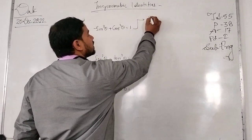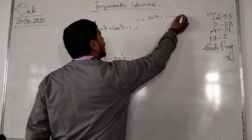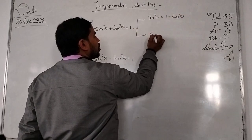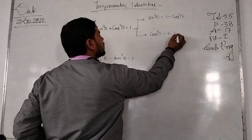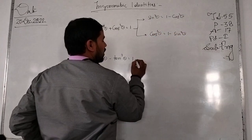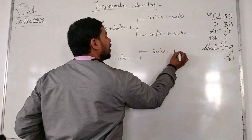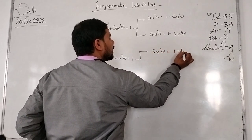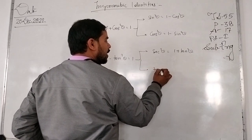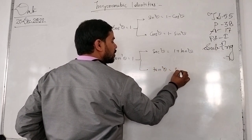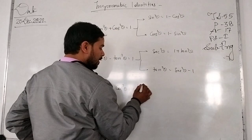From the first identity: sin squared theta equal to 1 minus cos squared theta, and cos squared theta equal to 1 minus sin squared theta. From the second: sec squared theta equal to 1 plus tan squared theta, and tan squared theta equal to sec squared theta minus 1.